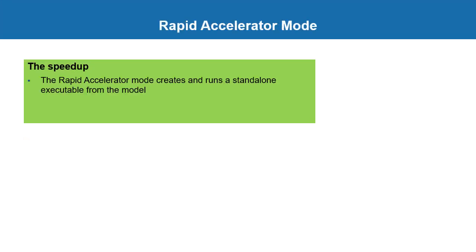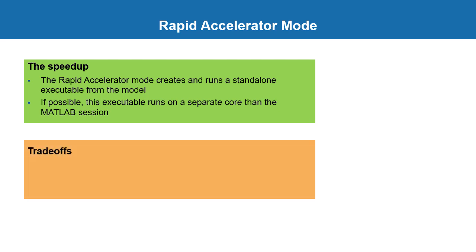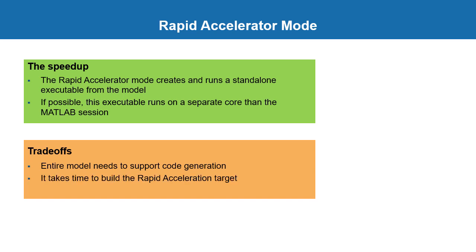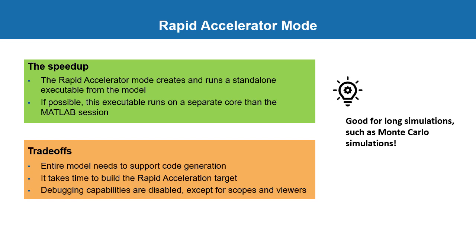Rapid accelerator mode improves simulation speed by running as a standalone executable, which if possible runs on a core different from the one the MATLAB process uses. However, to use this mode you need to make sure your whole model supports code generation. Generating the standalone executable takes more time, so if your simulation is short and you need to frequently recompile, rapid accelerator may not be a good fit. Debugging capabilities are also disabled except for scopes and viewers. If you're running long or many simulations, such as Monte Carlo simulations, rapid accelerator can give you the best performance.